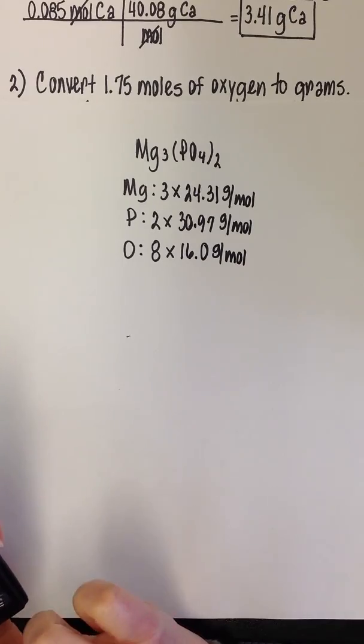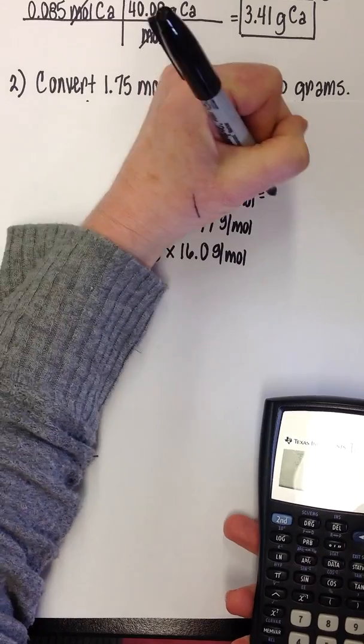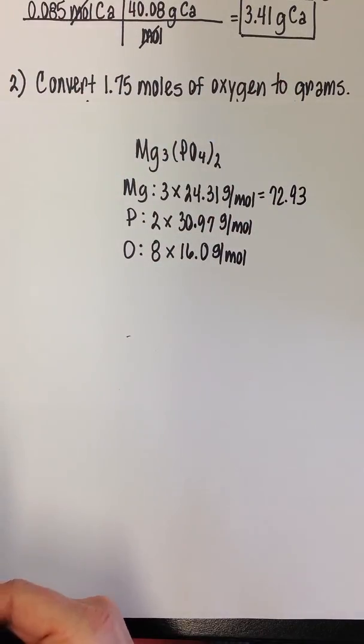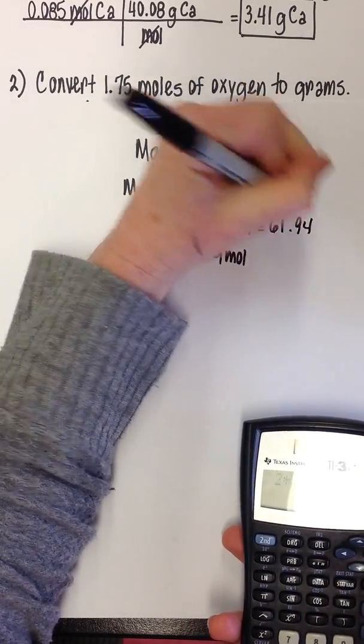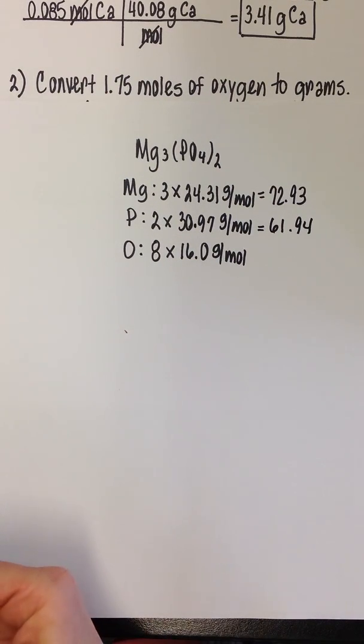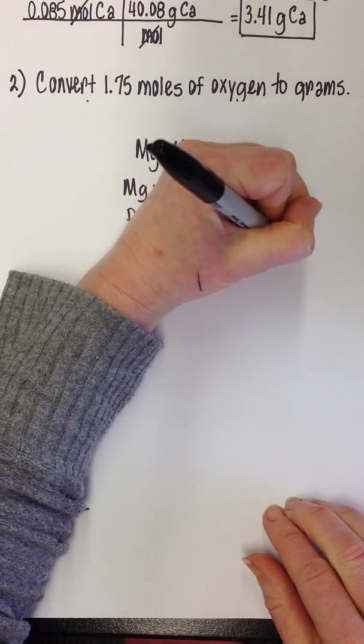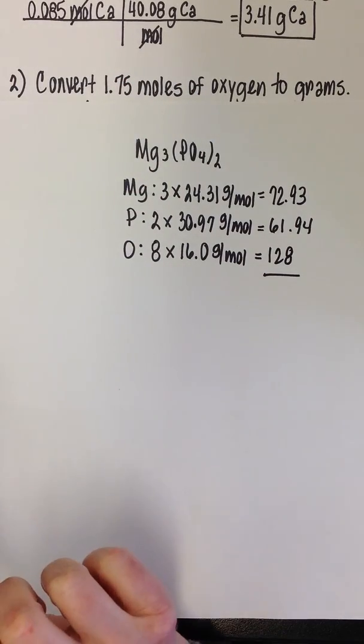I'm just going to plug all this into the calculator real quickly. Three times 24.31, that is going to be 72.93. Two times 30.97, that is going to be 61.94. And eight times 16 is 128. What we want to do to get the total mass of one mole of magnesium phosphate, we're just going to add those together.